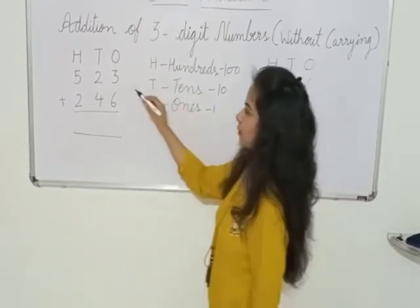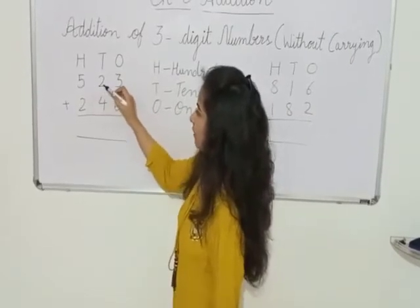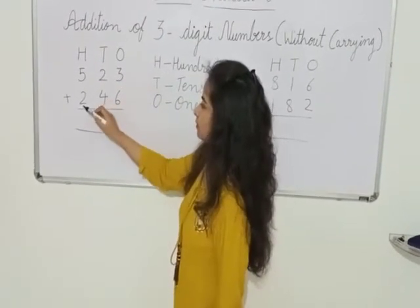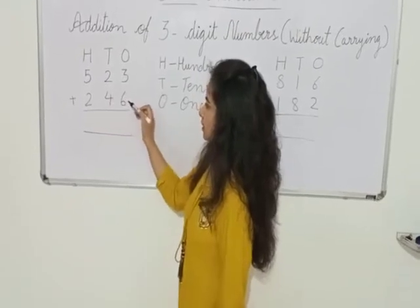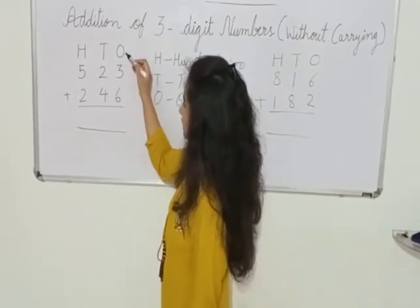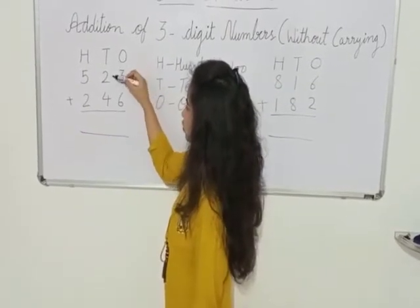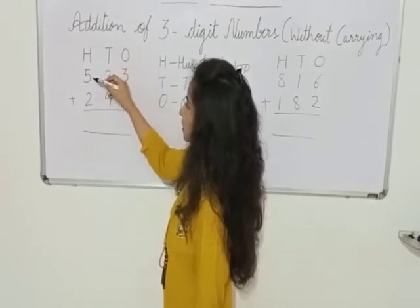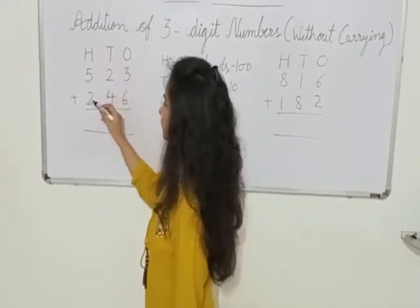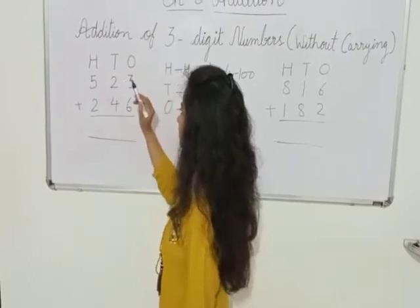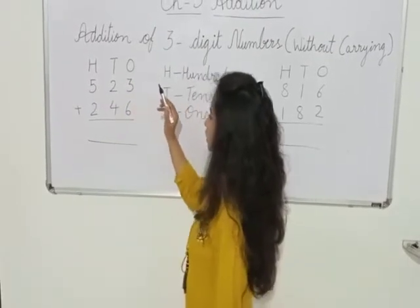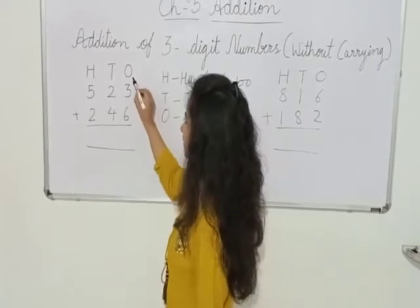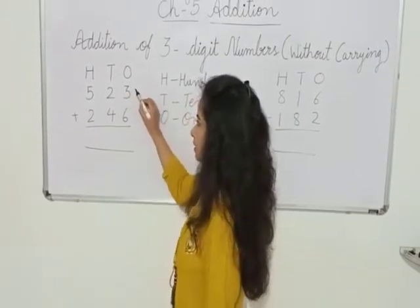Now let's take an example. Here we have 523 and 246. 3 is at the 1's place, 6 at 1's place, 2 at 10's place, 4 at 10's place, 5 at 100's place and 2 at 100's place. Students, always remember that when we do addition, we start with the 1's place.